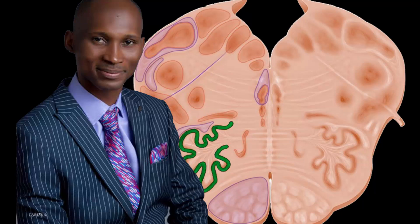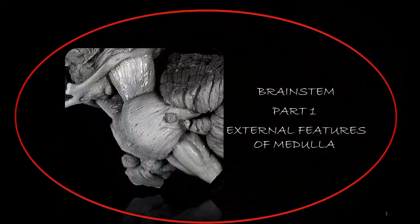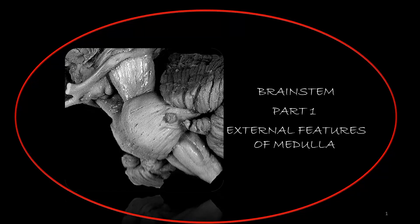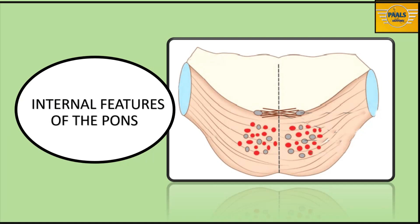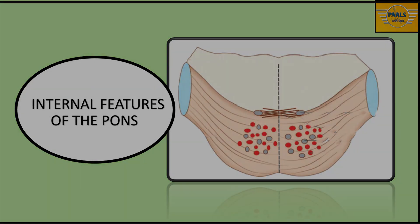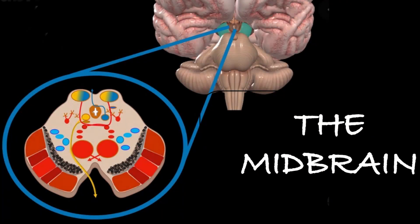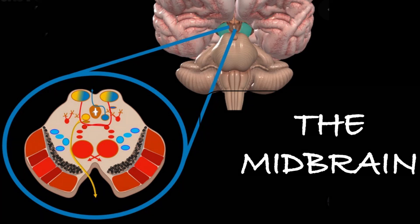In this lecture on anatomy of the brainstem, we've already done the first part. This is the second part and we have a third part. In the third part, we'll be looking at the internal and external features of the pons, and then in part four, we'll be considering the internal and external features of the midbrain. So, let's go to class.